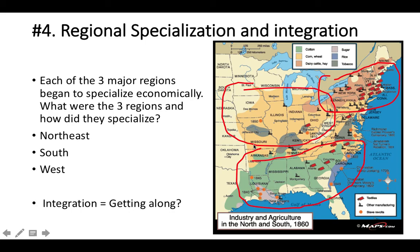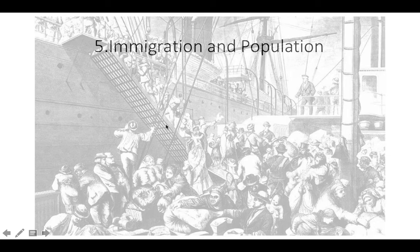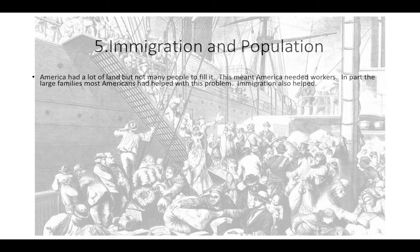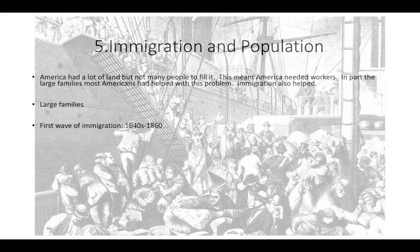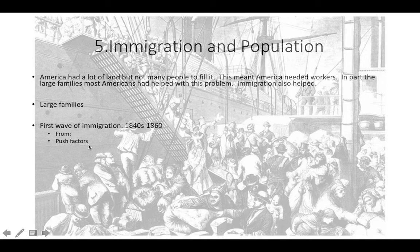The fifth and final reason is immigration and population growth. America had a lot of land but not many people to fill it — this meant America needed workers. In part that came from large families, but immigration also helped. Americans had a high birth rate that boosted the population. There was a big wave of immigration in the 1840s to 1860, primarily from Northern and Western Europe — the top two countries were Ireland and Germany. Push factors included the Irish potato famine, a failed political revolution in Germany, and economic troubles like floods and famine.